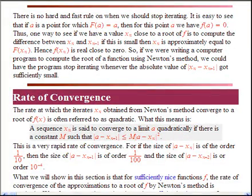Now, when do we stop iterating? Well, there's no hard and fast rule. It's easy to see that if a is a point for which f of a equals a, then this is a point for which f of a equals 0, as we've discussed via iterative methods. This is one way to have a value x sub n close to the root is to compute the difference between successive values. And if this is small, then we use the x sub n plus first iterate as the approximation to zero.